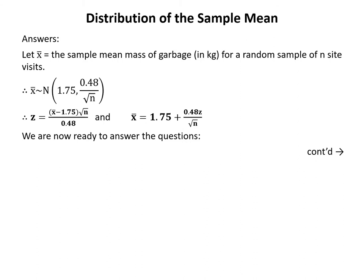We define x-bar as the sample mean mass of garbage in kilograms for a random sample of n site visits. Therefore x-bar is normally distributed with mean 1.75 and standard deviation 0.48 divided by the square root of n. This gives us two key equations: Z equals (x-bar minus 1.75) times the square root of n, divided by 0.48; and x-bar equals 1.75 plus 0.48 times Z divided by the square root of n.